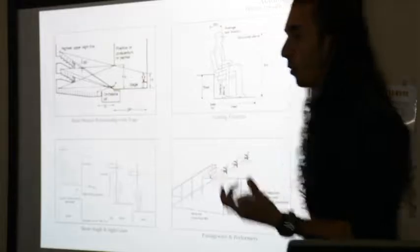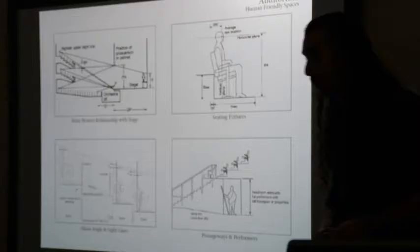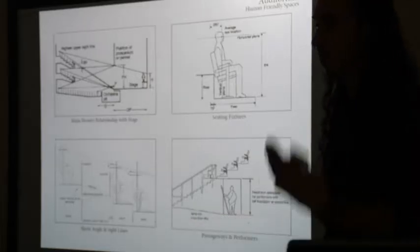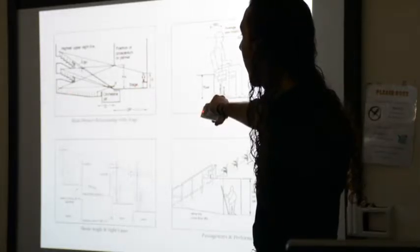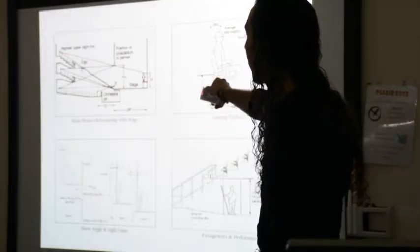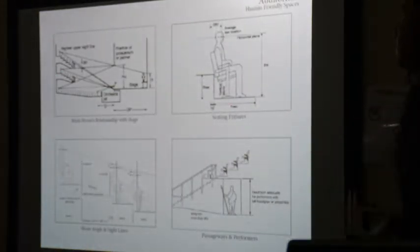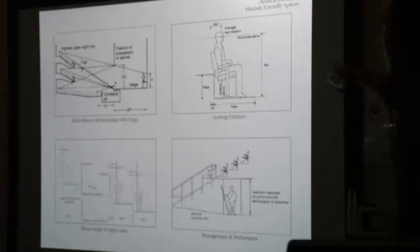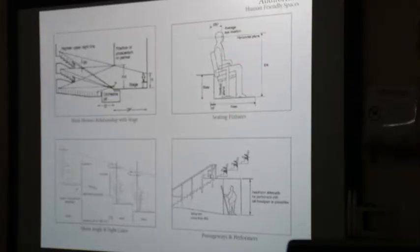Another very crucial point of the auditorium is how it reacts with humans — hence the term human-friendly spaces. There's no point designing an excellent auditorium if you're uncomfortable, or if one person can see clearly while another can't. First, we look at the relationship of the main house to the stage, making sure every point of the main house has direct visual access to the stage. Then you have the seating fixtures themselves — how high is each step, how high is the average person's eye. That determines whether the person behind can see above the person in front. These are general rules already measured to human proportions, and if you follow them, you'll be safe.